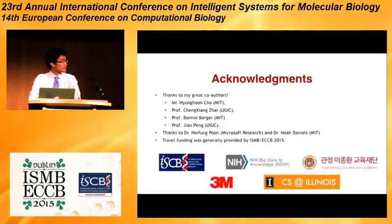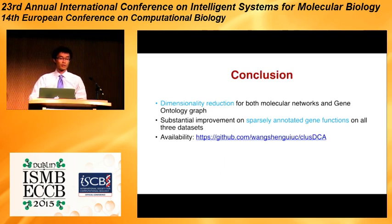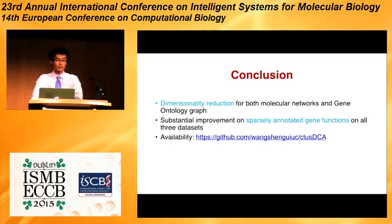I would like to thank my co-authors: Hong Chou, Professor Chen Xiangzhai, Professor Boney Berger, and Professor Jianpeng. The travel funding was generously provided by ISMB/ECCB 2015. I also want to thank Dr. Huifeng Pu and Dr. Noya Daniels for helping me practice my talk. In conclusion, we propose a dimensionality reduction method on both the molecular network and gene ontology graph, and we get substantial improvements on sparsely annotated gene function on all three datasets. Our code is also available online.